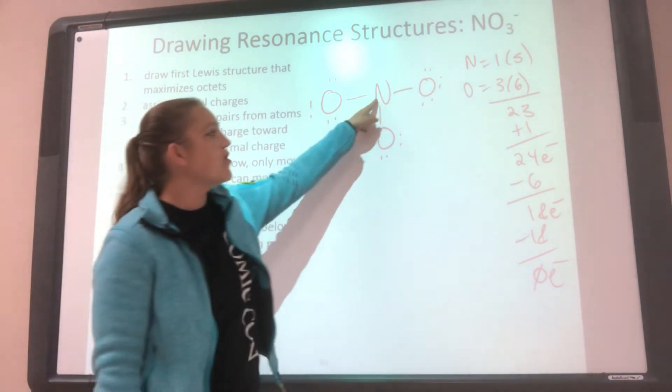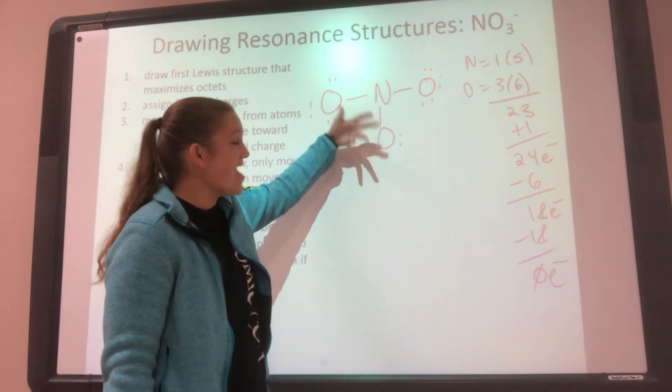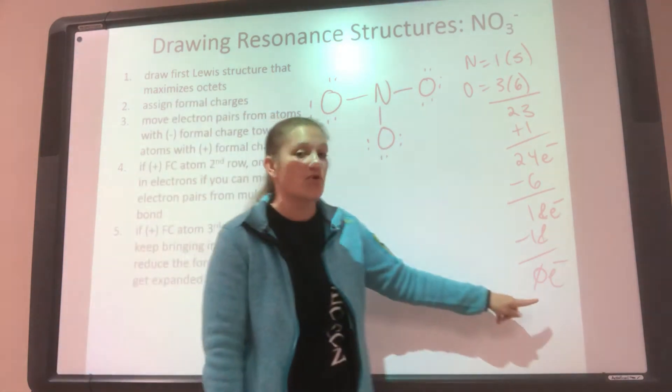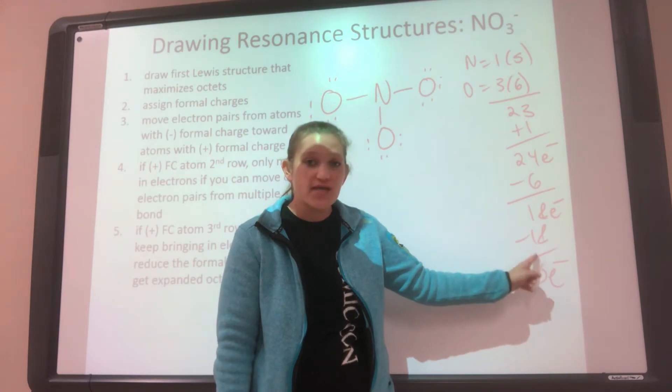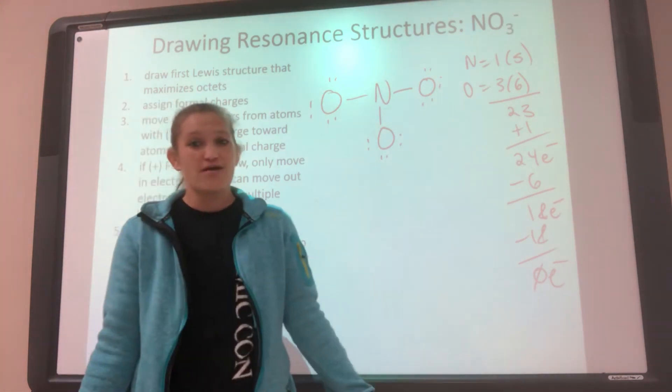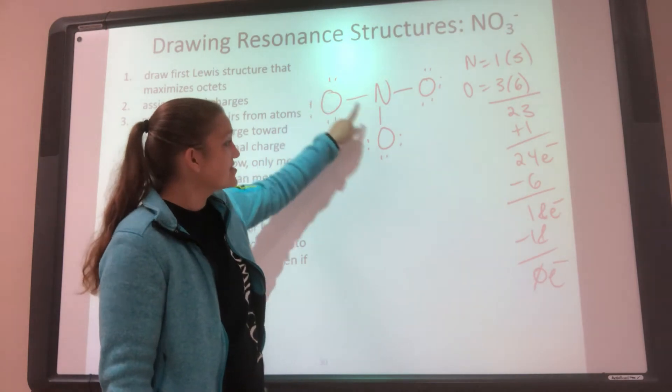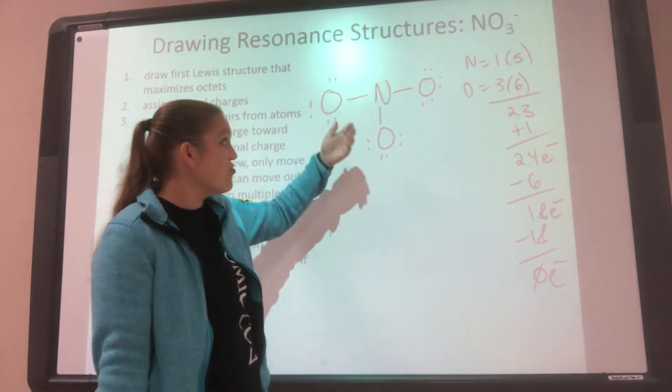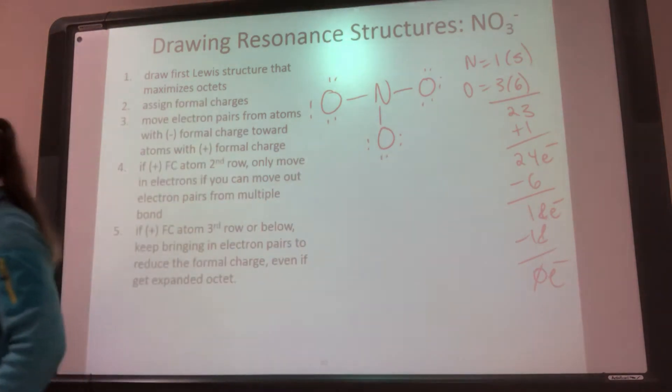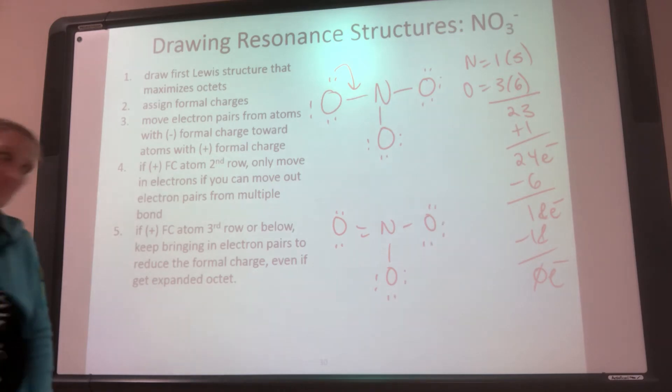All right, next. Nitrogen wants to be happy. He's got 2, 3, 4, 5, 6. He wants 8. So that means he wants 2 more. Do I have 2 more? No. This is why you have to count these. So what do I do? I have to move. So do I need to do formal charge? Not really, not right now. Because this guy, this guy, and this guy are all the same. So I just pick one. So pick one and move the electrons. Doesn't matter. So you pick one and you move the electrons.